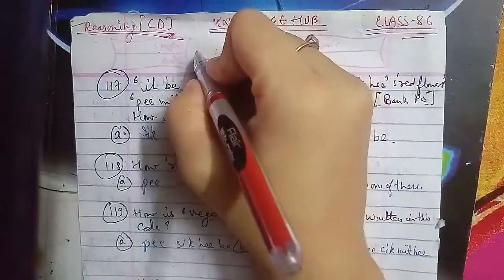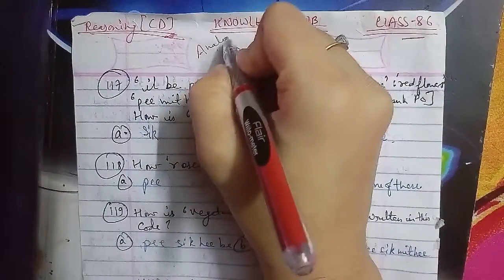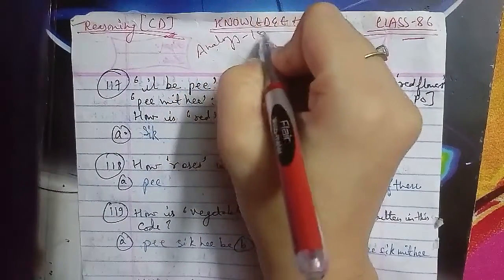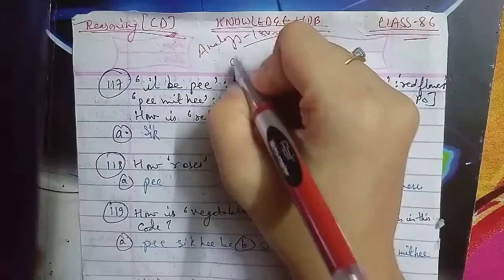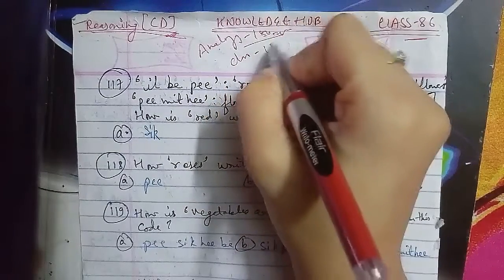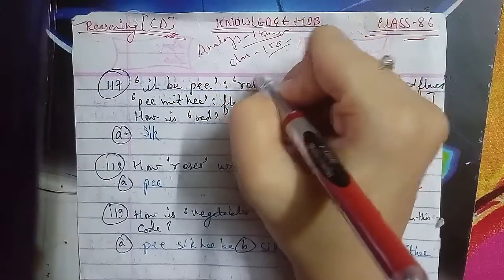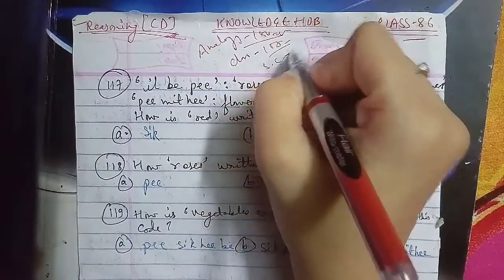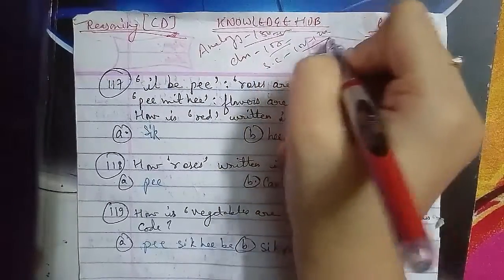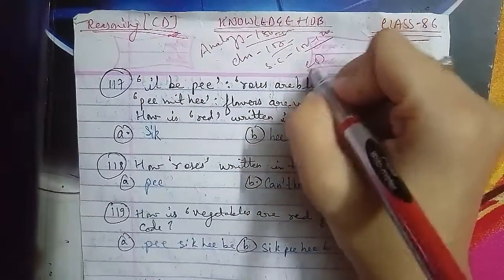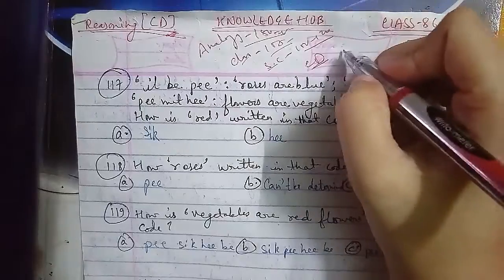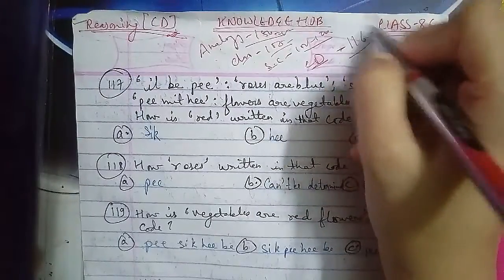We have already done analogy class with 500 questions and 200 questions. Then we have classification with 500 questions, and series completion with 120 questions. Now we have topics such as coding and decoding where we have already completed 116 questions.